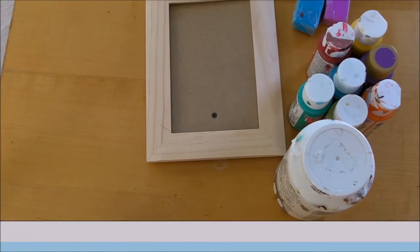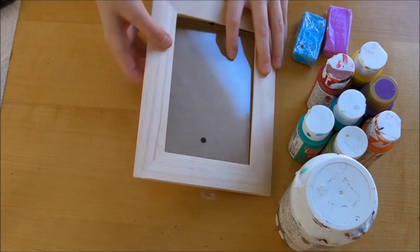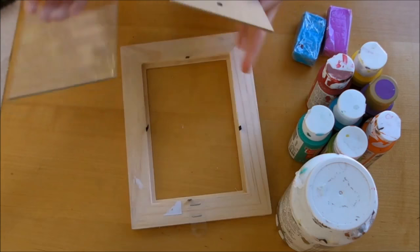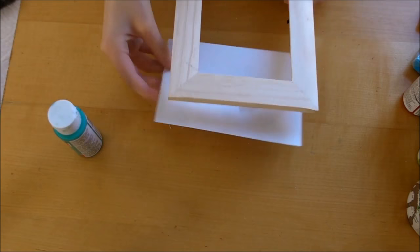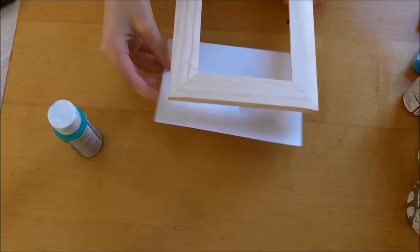Next we're going to start on our Bertie Botts Every Flavored Beans frame. For this one you're going to need a wooden frame just like before, some multicolor paints in the colors that you want to paint your beans, some sealer, some air-dry clay, and I think that's it. So you're going to take out the glass pane of your frame. I'm going to move these aside and take out the robin's egg blue paint. That's the signature color for Honeydukes. So I'm just going to go ahead and paint the entire frame in that blue color.